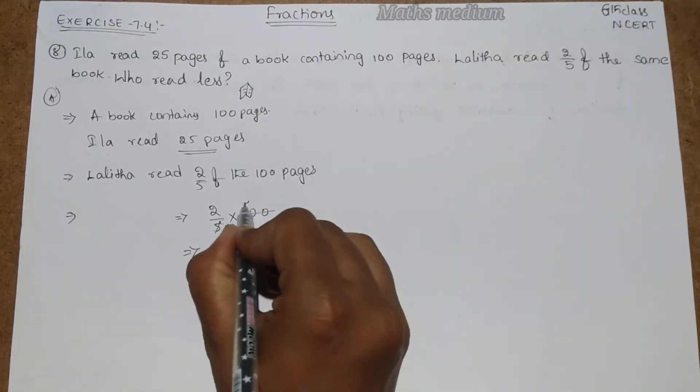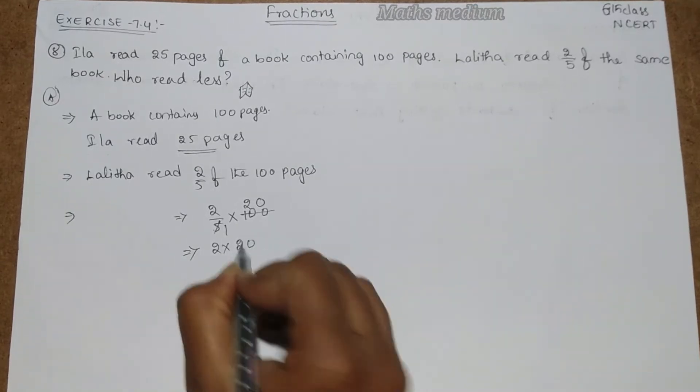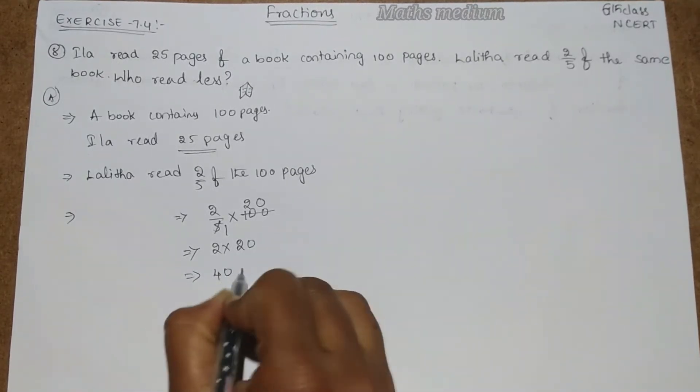So if you simplify this, you will get the number of pages. 5 ones are, 5 twenties are, so 2 into 20, so that is 40 pages.